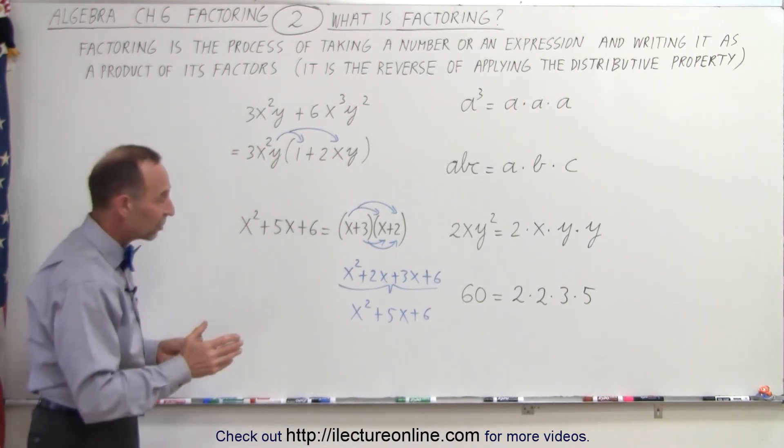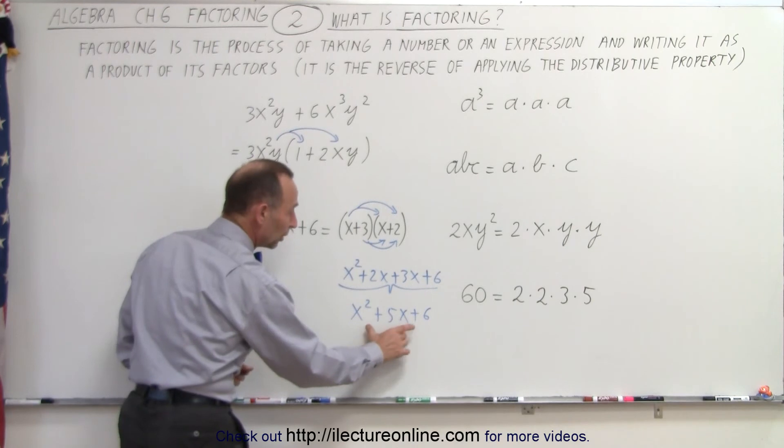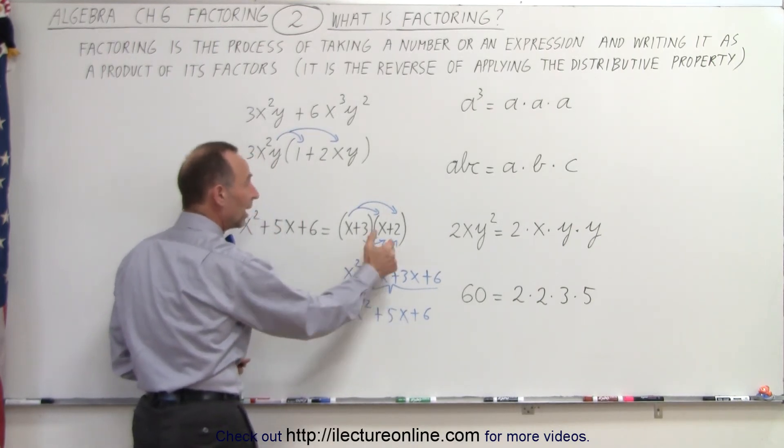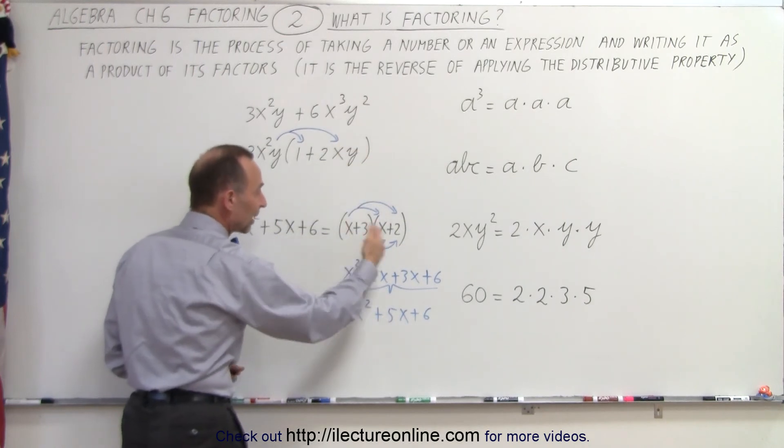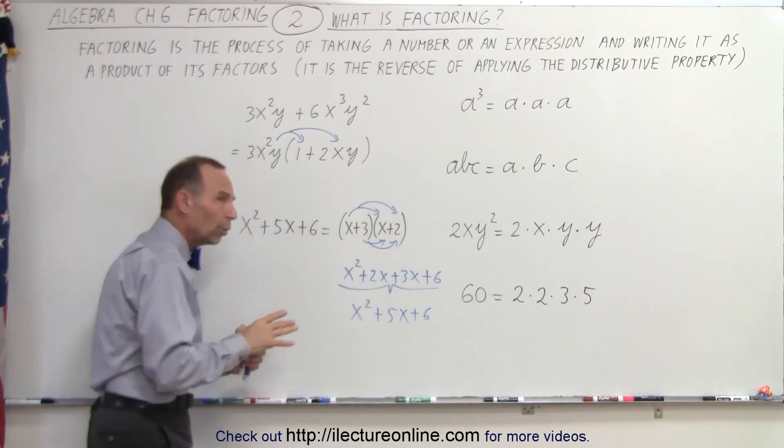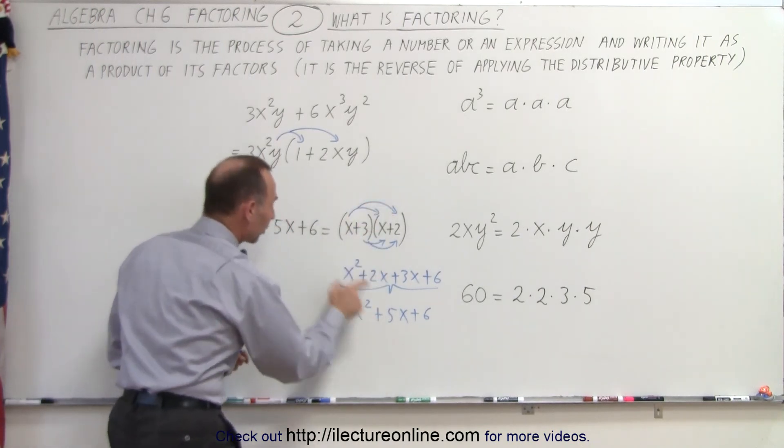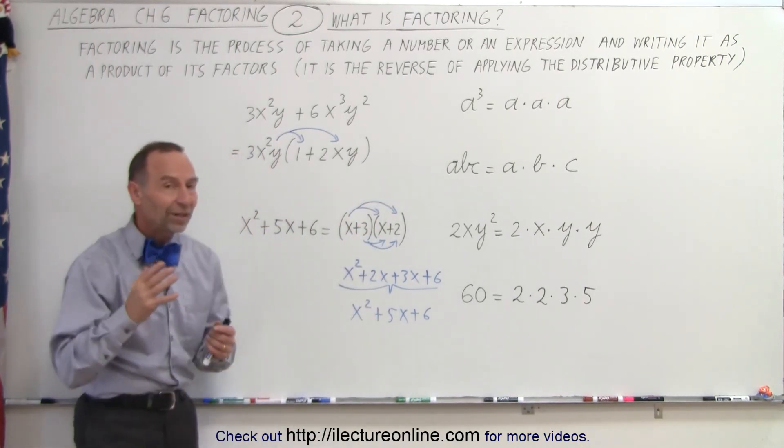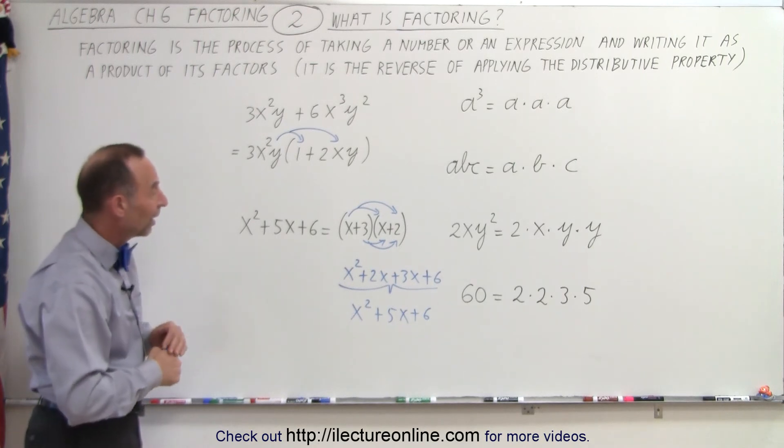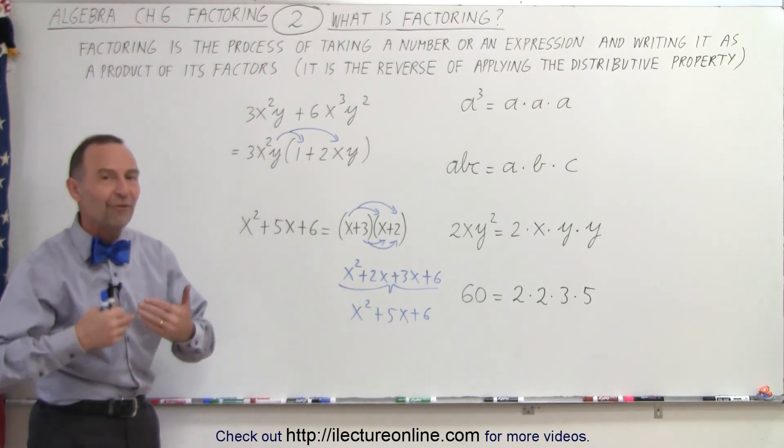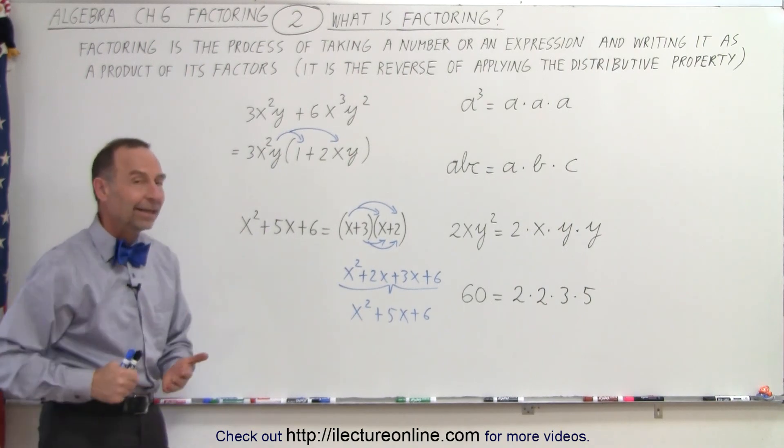So in other words, factoring is taking this trinomial and writing it as the product of its two binomials or its two factors. And then going in the other direction, we're multiplying everything out using the distributive property. Then we get back what we started with. And so hopefully this explains and helps us understand what we mean by the concept of factoring. And that is how it's done.